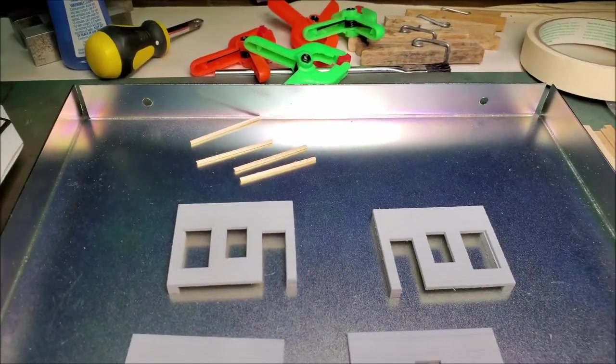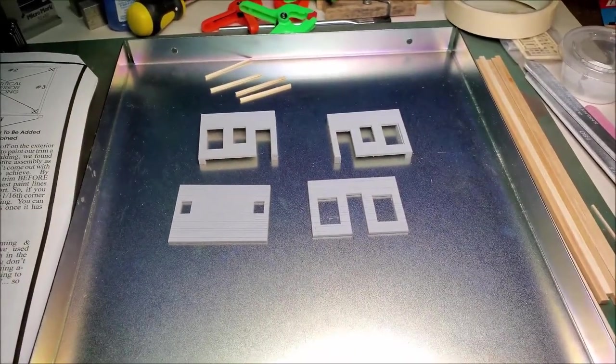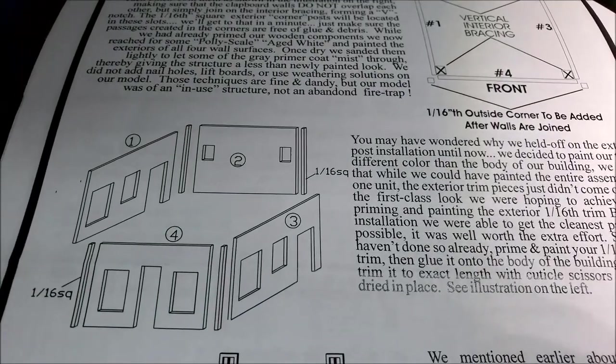The four small pieces in the tray are for the corner trim, and Bar Mills suggest you paint those separately so you get a nice clean paint edge.